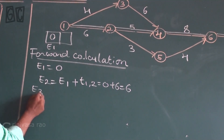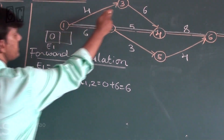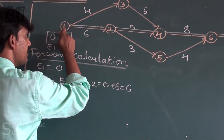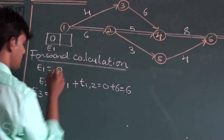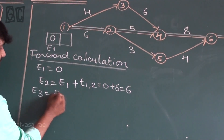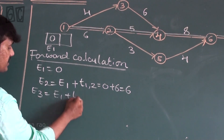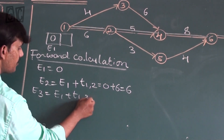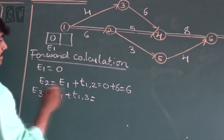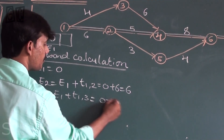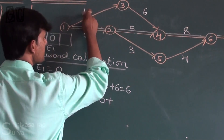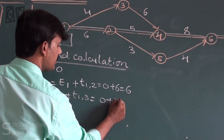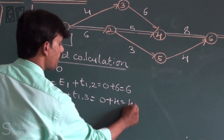Now E3: E3 is coming from E1 plus time taken from 1 to 3, so E3 equals 0 plus 4, which gives E3 equal to 4.